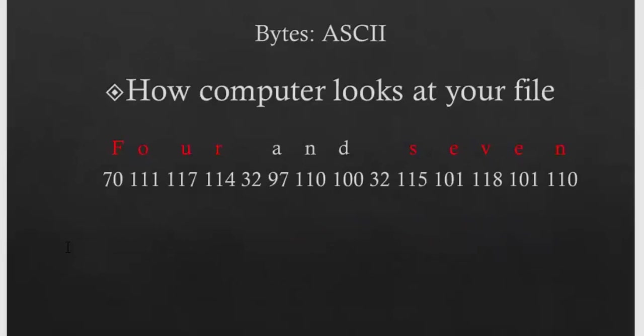How does a computer look at your file? If we write 'For 7', each character converts to its ASCII code. Capital F has ASCII code 70, lowercase o is 111, space is 32, and so on. All characters are converted to ASCII codes, then these codes are represented as binary numbers that will be saved in memory.